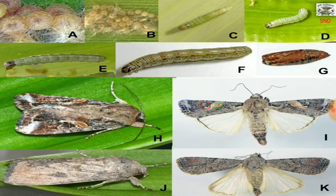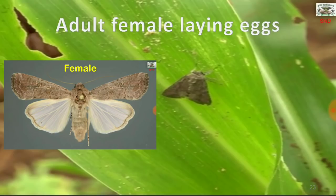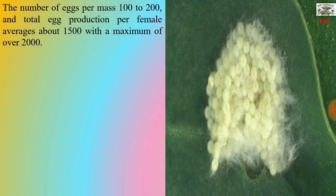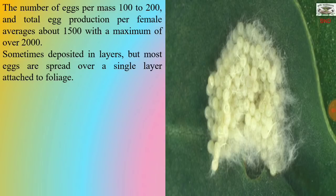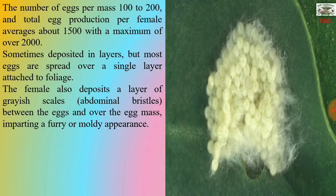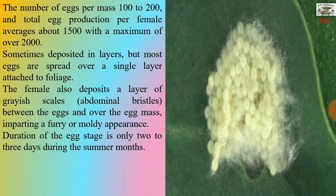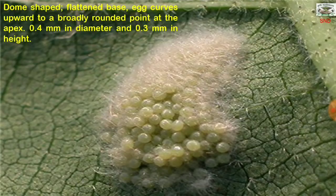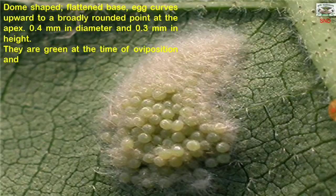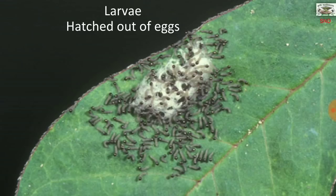Here is the life cycle of fall army worm. The adult female lays eggs on the leaves. The egg mass visible on the leaves contains 100 to 200 eggs per mass, with total egg production averaging about 1500 per female, with a maximum of over 2000. Eggs are sometimes deposited in layers but most are spread over a single layer attached to foliage. The female also deposits a layer of grey scales and abdominal bristles over the egg mass, imparting a furry or mouldy appearance. The duration of the egg stage is only 2 to 3 days during summer months. The eggs are dome-shaped and flattened at the base, curving upward to a broadly rounded point at the apex — 0.4 mm in diameter and 0.3 mm in height. They are green at oviposition and become light brown prior to eclosion.